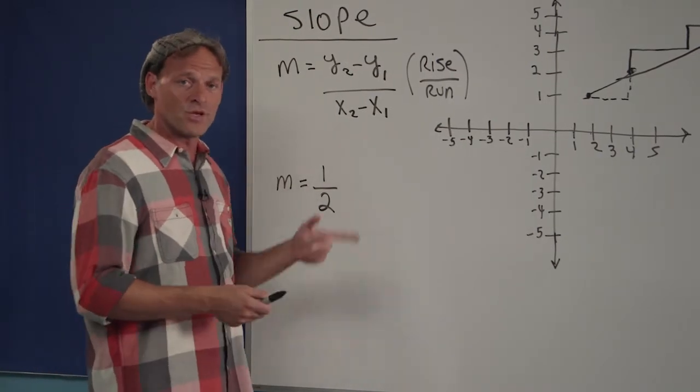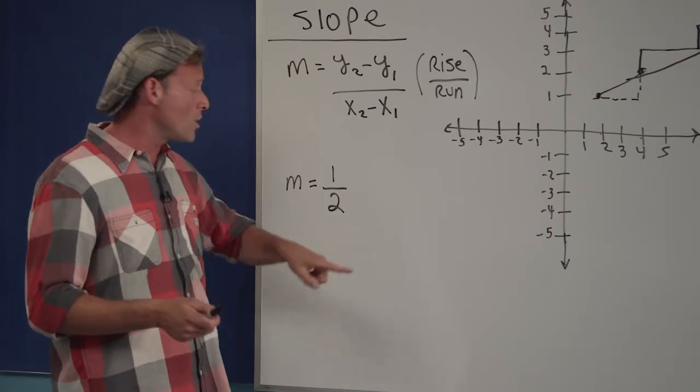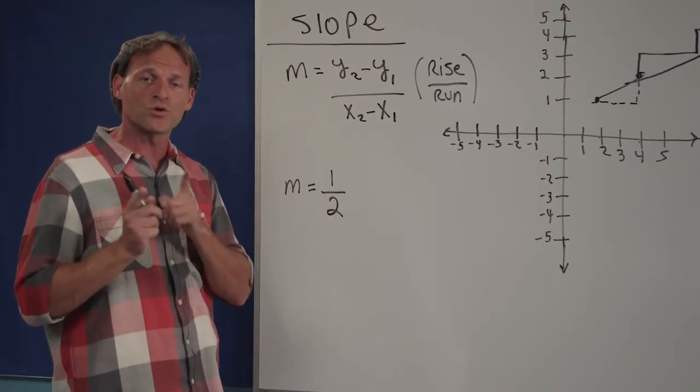Obviously a steepness of five would be much greater. A steepness of two would be greater, but not as great as five. One eighth would be even less steep. That's what slope is, how steep something is.